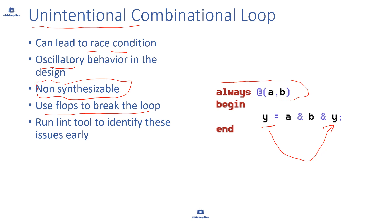When you want to reuse values, flop the value and then use it. These rules help us identify issues in the design and catch them early. We'll talk about how we catch these issues early.